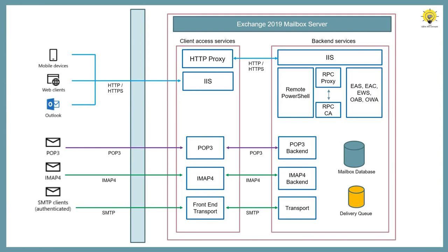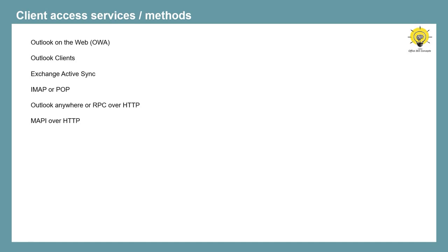If the client is using HTTP protocol, then the same protocol will be used by the client access services to proxy that request. These are the client access services and client access methods in Exchange Server 2016 and 2019: Outlook on the web or OWA, Outlook clients, Exchange ActiveSync, IMAP or POP, Outlook Anywhere or RPC over HTTP, and MAPI over HTTP.